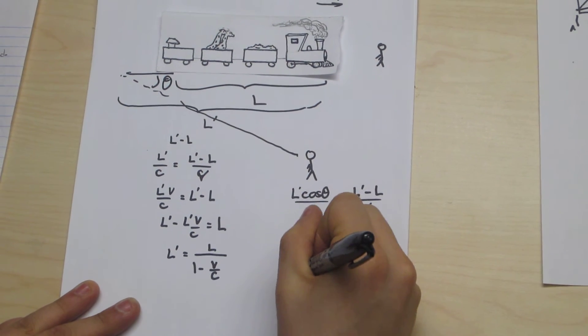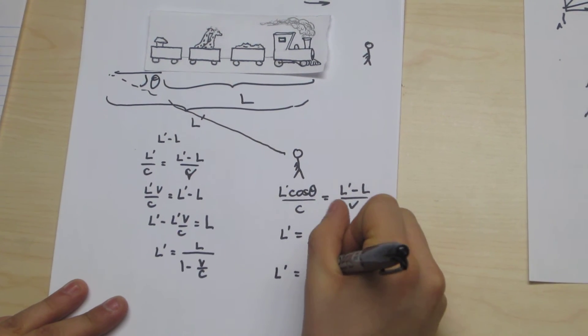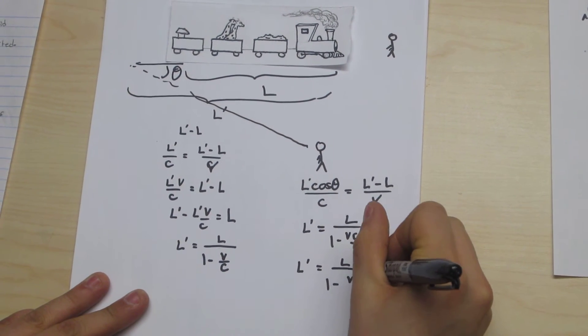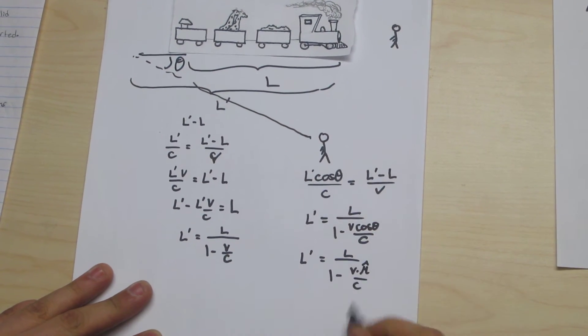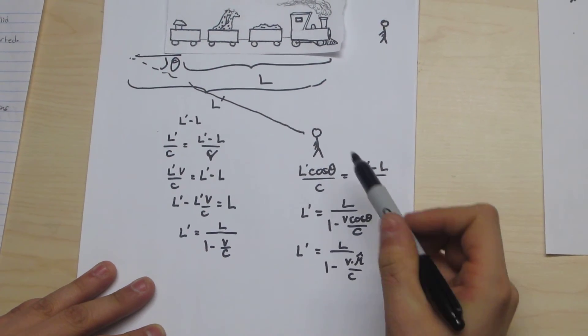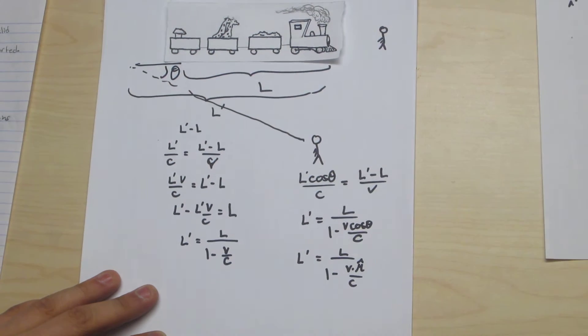This can alternatively be written as l prime equal to l over 1 minus v dot r hat over c, where r hat is the unit vector between the observer's position and the time-retarded position of the caboose.